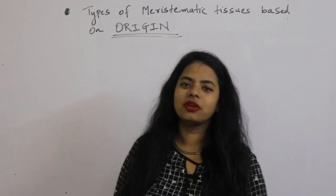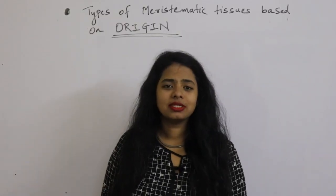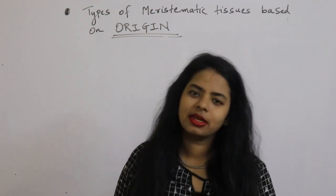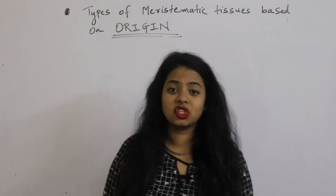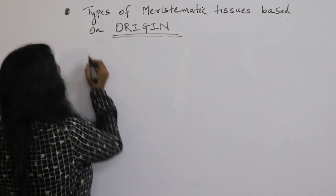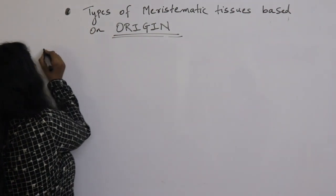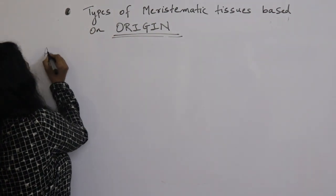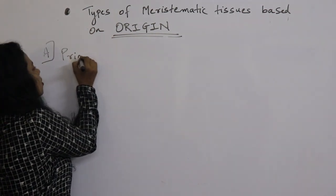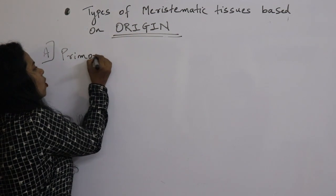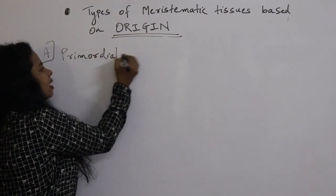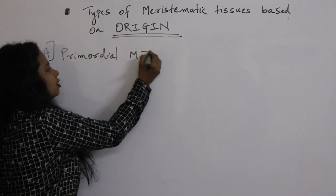Hi guys, in this video we are going to study the types of meristematic tissues based on origin. Let us start with the first type of meristematic tissue based on origin, that is primordial meristematic tissue.